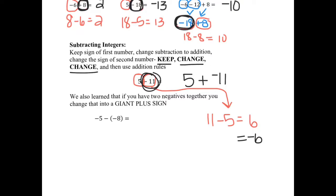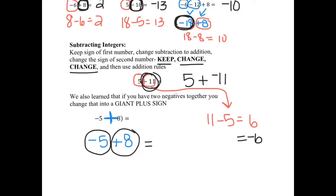One important thing we learned: when you have two negatives together, turn that into a giant plus sign. So for example, negative 5 minus negative 8 becomes negative 5 plus 8. Then I circle the numbers: negative 5 and positive 8. Signs are different — that's really a subtraction problem. 8 minus 5 is 3. Keep the sign of the bigger number, so my answer is positive 3.